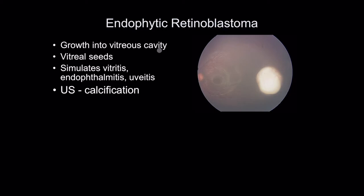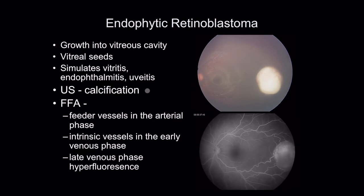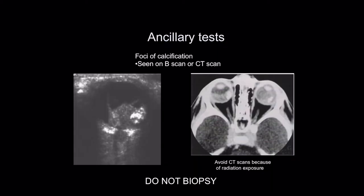Endophytic retinoblastoma is where the growth is into the vitreous cavity. You get vitreous seeding. It can simulate vitreitis, endophthalmitis, and uveitis, and on ultrasound it is calcified. Fluorescein angiography shows feeder vessels in the arterial phase feeding the tumor, intrinsic vessels in the early venous phase, and hyperfluorescence in the late venous phase.